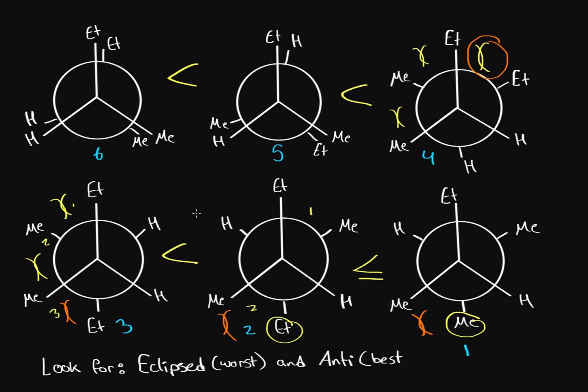Let me reiterate all the steps to determine alkane conformation stability. First, you want the two biggest groups to be anti. Then, after the two biggest groups are anti, you want fewer gauche interactions. After that, you also want to look for the second biggest groups being anti. Finally, if the two conformations are exactly identical, you look at whether any of them have the biggest groups as smaller groups — if the biggest groups are smaller, there are fewer interactions and therefore it is more stable. Those are the four different things to look for when determining conformational stability.